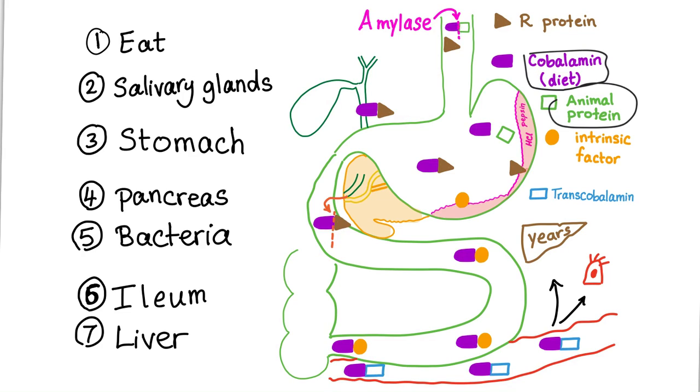But when you eat this vitamin B12, it's not free. It's bound to the animal protein. We have to break this bond between them. Who will do that? You will get amylase from your salivary gland, as well as your gastric secretions. As you know, hydrochloric acid in your stomach will convert pepsinogen into pepsin. Pepsin will sever this bond between the cobalamin and the animal protein.